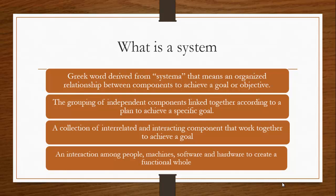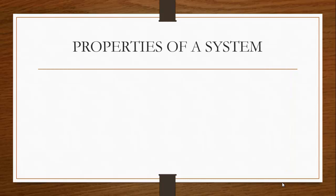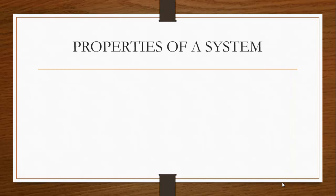One common thread in all these definitions is that a system comprises components, and every system is made to achieve a goal or an objective. We now move on to the properties of a system.